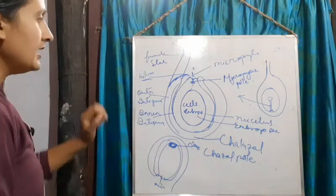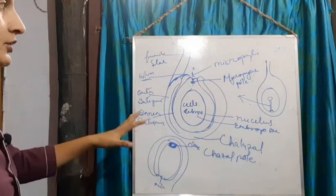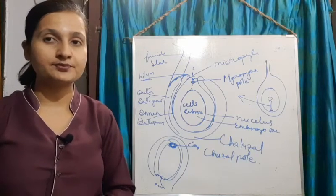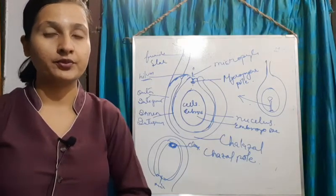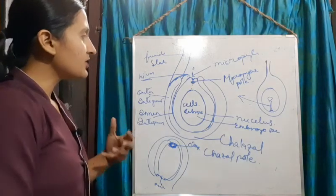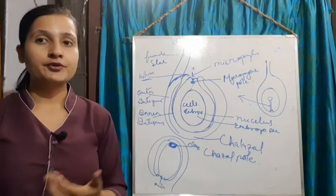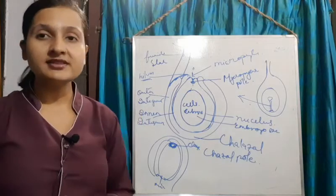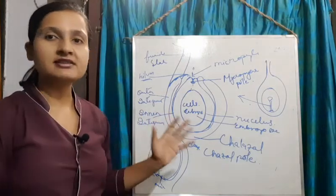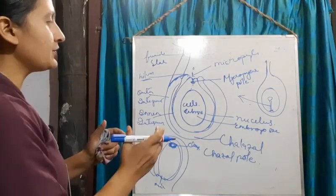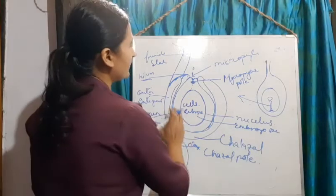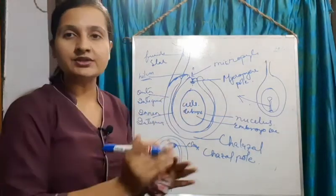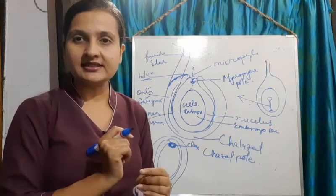Now let us move to megasporogenesis — that is, how the process of megasporogenesis takes place. As I told you, it is a process where microspores are formed. These microspores are formed from the megaspore mother cells. Now let us see where these megaspore mother cells come from. I am going to show you the internal structure of the ovule and how this process takes place.